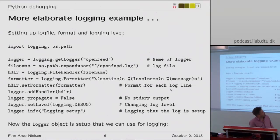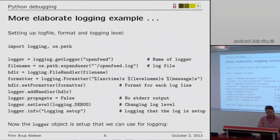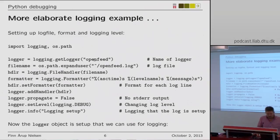A more elaborate example is shown here where we set up a log file, change the formatting, and change the logging level. We do the same functionality but with a more complex scheme. We construct a logger, call it 'openfeed', and specify a particular file name — call it 'openfeed.lock' — placed here.